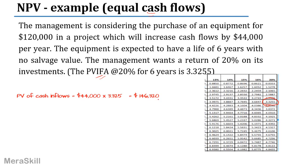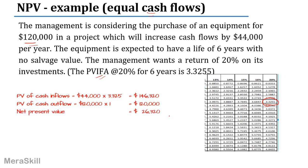What is the present value of the cash outflow? It is just the $120,000 initial investment. The initial investment is at year 0 — the discount factor is 1 because today $1 is equal to $1. There is no time value discount applied. Therefore it is $120,000. The difference is $26,320 — that is the net present value.